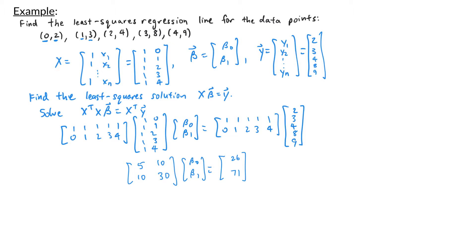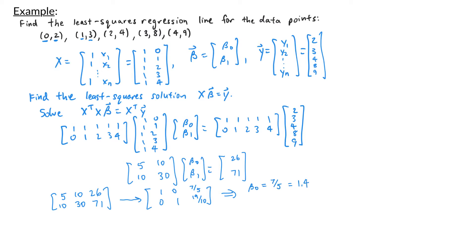To find beta, I row-reduce the augmented matrix [5, 10, 26; 10, 30, 71]. Row reducing gives [1, 0, 7/5; 0, 1, 19/10]. So beta-zero is 7/5 or 1.4, and beta-one is 19/10 or 1.9. The least-squares regression line is defined by y equals beta-zero plus beta-one times x, so our regression line is y equals 1.4 plus 1.9x.